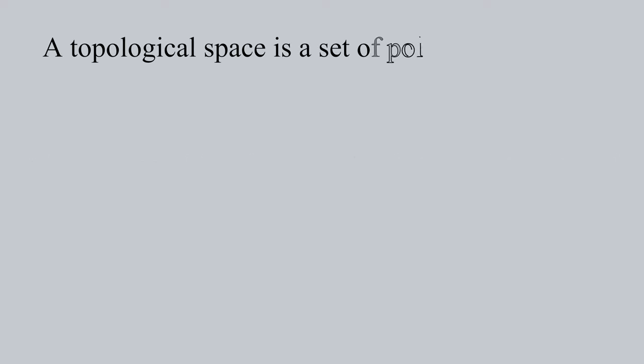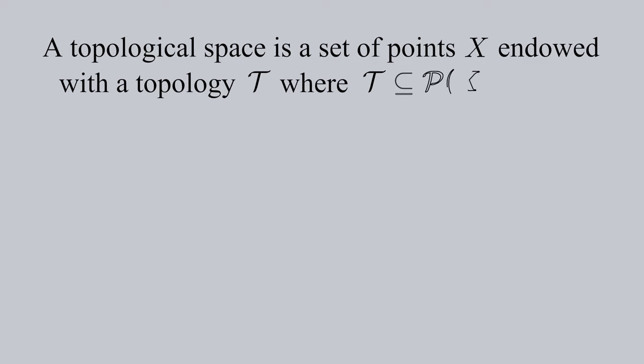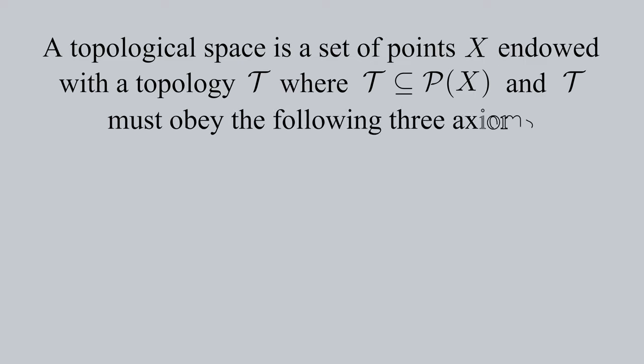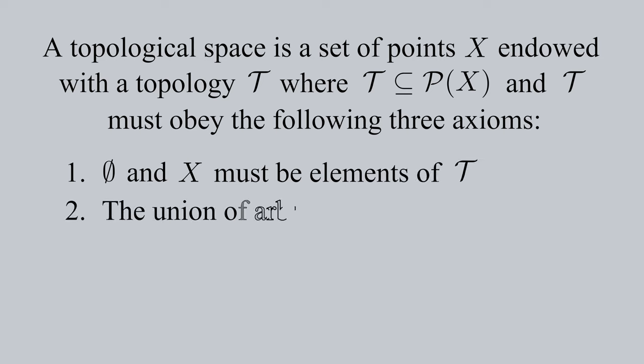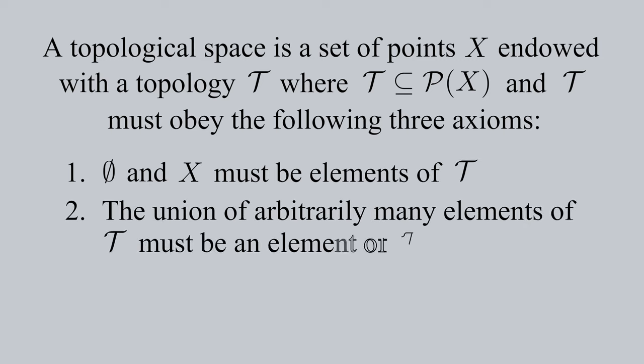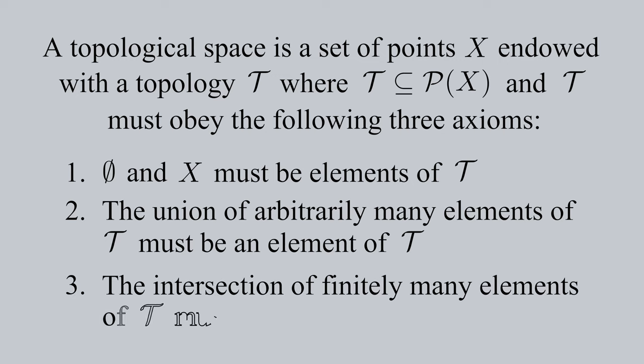A topological space is a set of points X endowed with a topology tau, where tau is the subset of the power set of X, and tau must obey the following three axioms. 1. The empty set in X itself must be elements of tau. 2. The union of arbitrarily many elements of tau must be an element of tau. 3. The intersection of finitely many elements of tau must be an element of tau. What's important about a topology is that its elements are the open subsets of the space the topology is defined on.